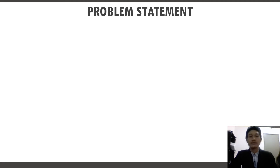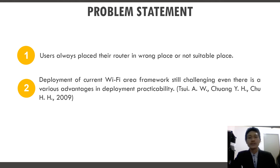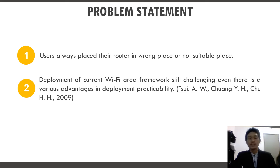Problem Statement: Placement of Wi-Fi devices such as modem, router, and access point is one of the important things users need to know. According to researchers in 2009, deployment of current Wi-Fi area frameworks is still challenging even with various advantages in deployment flexibility. Users did not know how to place their Wi-Fi devices in suitable locations to provide the best signal performance. Some users have placed their Wi-Fi devices in unsuitable places, such as in a box, to keep them more secure from others.